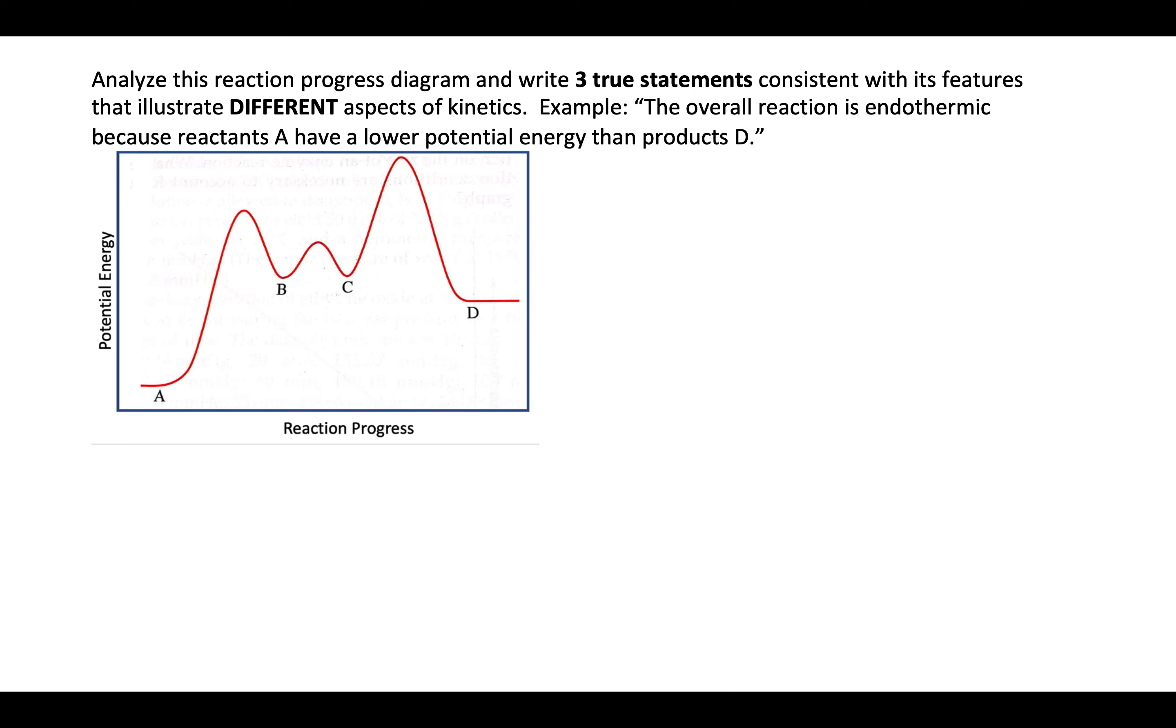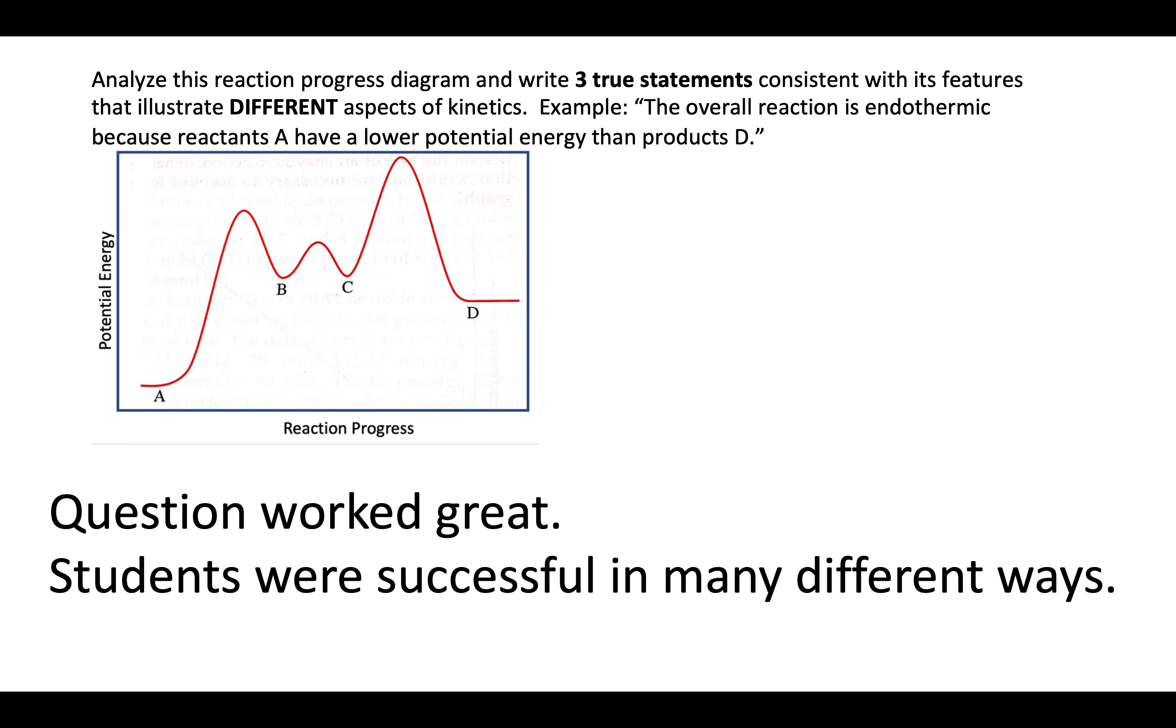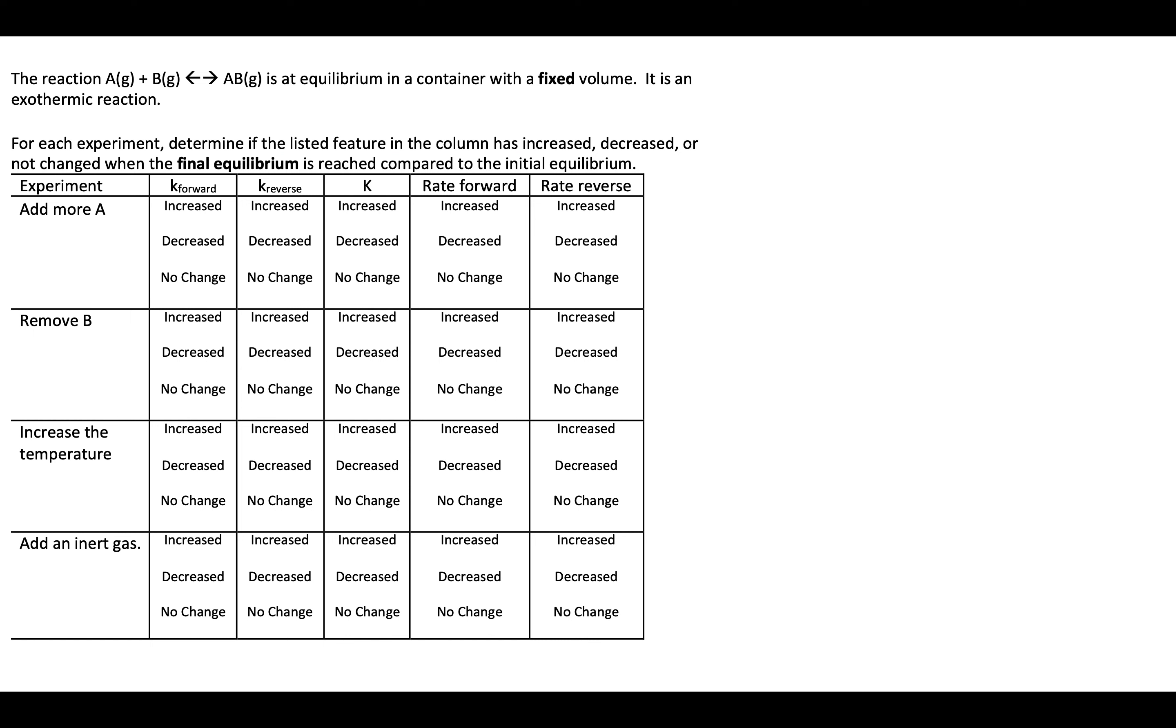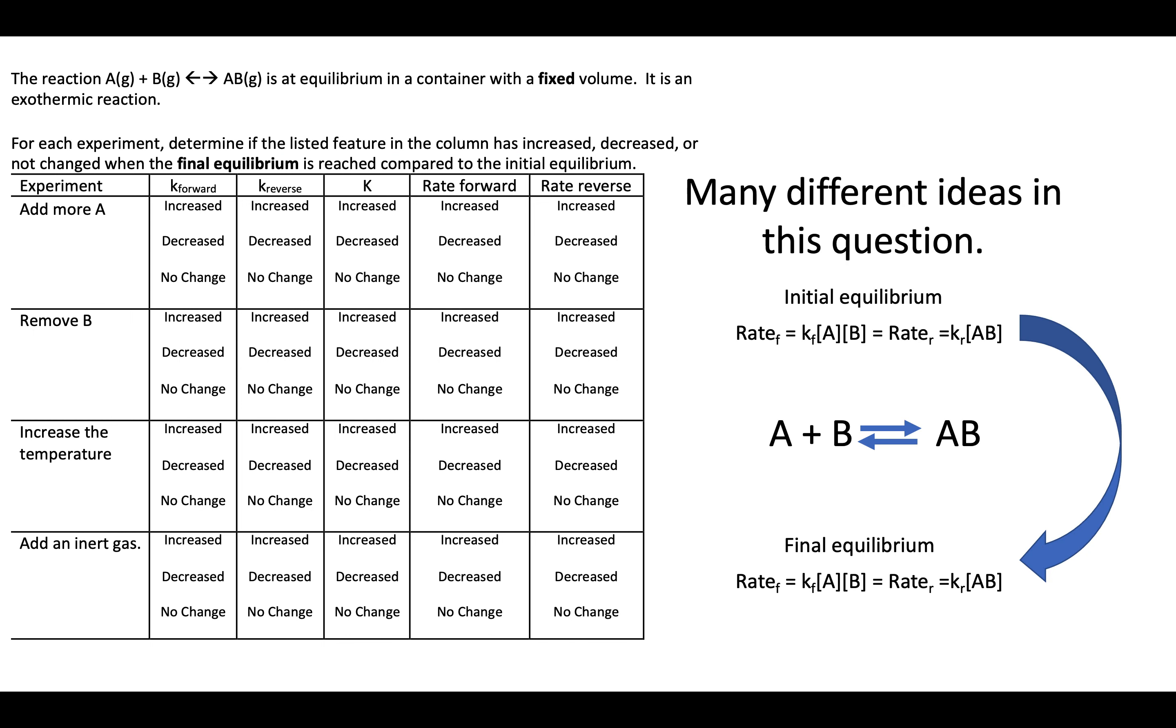This particular one, this question, it worked great. Students were successful in many different ways. There were a lot of different features that you could describe and I thought outstanding work on it. Within this one, this is also a question that has many different ideas. So let's think about this one. We have an initial equilibrium. For at equilibrium, that means the overall rate forward equals the overall rate reverse. A given rate forward is going to include the rate constant and the concentration terms.